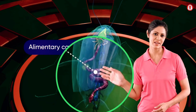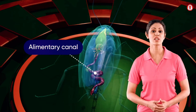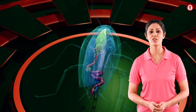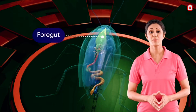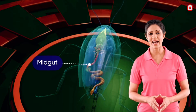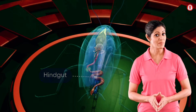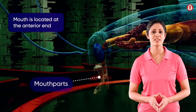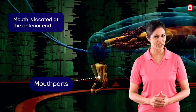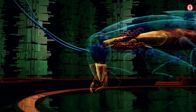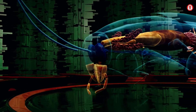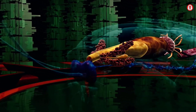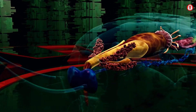The alimentary canal found in a cockroach body cavity is divided into foregut, midgut, and hindgut. The mouth, made up of mouth parts, is located at the anterior end of the head, lying on either side of the hypopharynx.